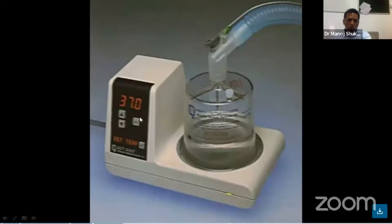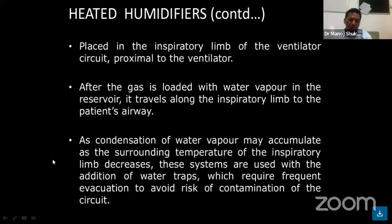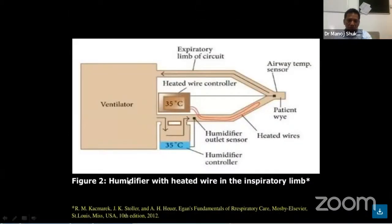These are pictures of a heated humidifier where we see the temperature — from here the gas is condensed and then delivered to the patient. The second picture shows the heated humidifier with heated wires inside the liquid, along with the expiratory limb. Water condenses and then it delivers at an optimal humidification temperature, which is required for the lung protection strategy.